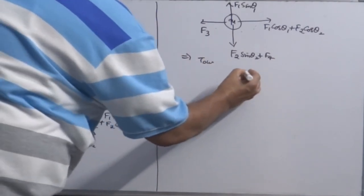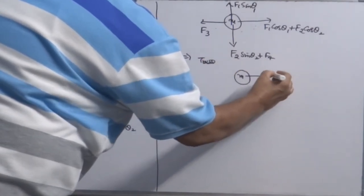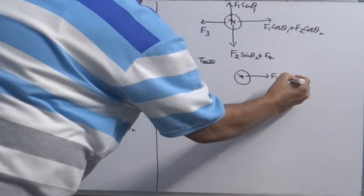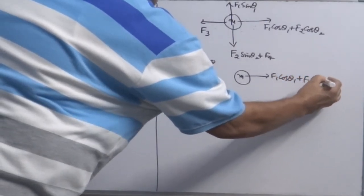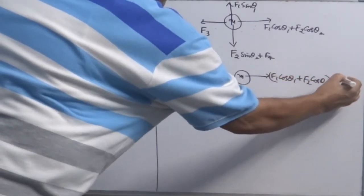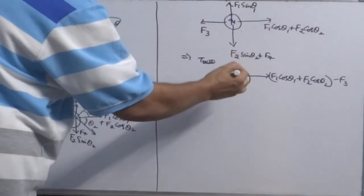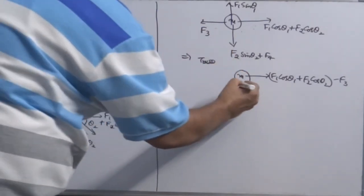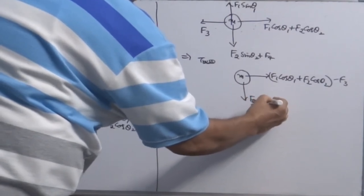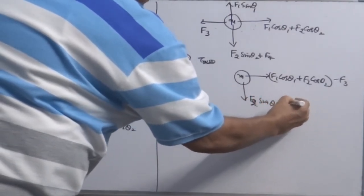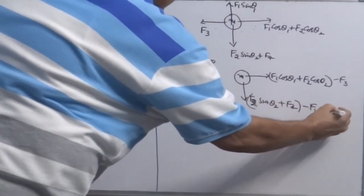What are two forces? Have a look. Here you will have F1 cos theta 1 plus F2 cos theta 2 minus F3. Or if F3 is greater than, then the force will be here. And this side you will have force F2 sin theta 2 plus F4 minus F1 sin theta 1.